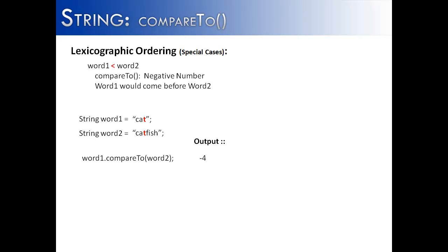And catfish is four letters longer than cat. Once it decides that two words are equal and one word is ended, it says, okay, how much longer is one word than the other? And you can see that catfish is four letters longer than cat. Therefore, we get the negative four.